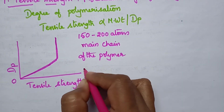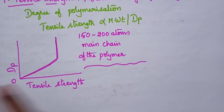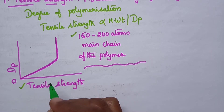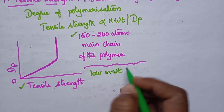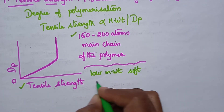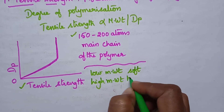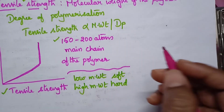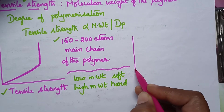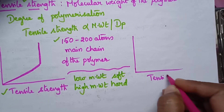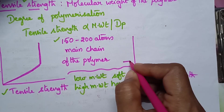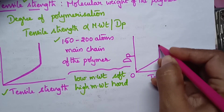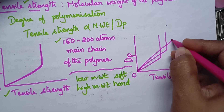So if the main chain of the polymer contains at least 150 to 200 atoms, then that polymer exhibits enough tensile strength. Polymers with low molecular weight are soft, whereas polymers with high molecular weight are hard and strong. Let us consider examples such as polythene, polyvinyl chloride, and polystyrene.